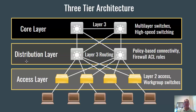At the distribution layer, we have multi-layer switches, which is the layer where we implement routing. It's also the layer where policy-based connectivity is implemented — rules, firewall rules, ACLs, things like that. Those are implemented at the distribution layer. It's the layer of routing.